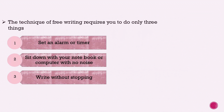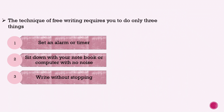Free writing doesn't require that much. There are three things to do. First, set a timer for a specific time — either 10 minutes or 30 minutes, no more. If you don't have a specific time range, you could end up free writing for a couple of hours, which is not the purpose. The purpose of free writing is to collect information you already have. After you set the alarm, sit down with your notebook or computer with no noise — background music is fine if you prefer. Then write without stopping until the alarm goes off.